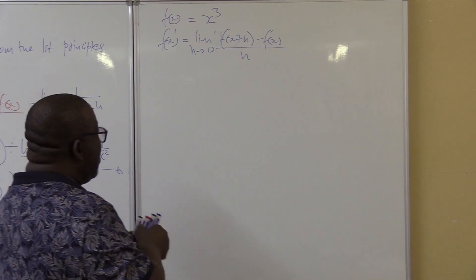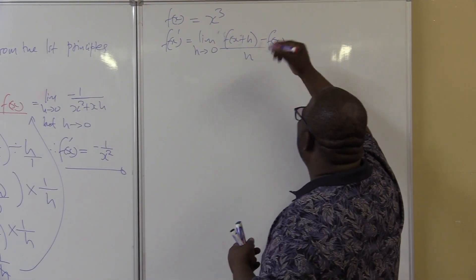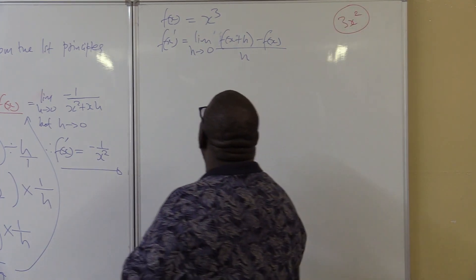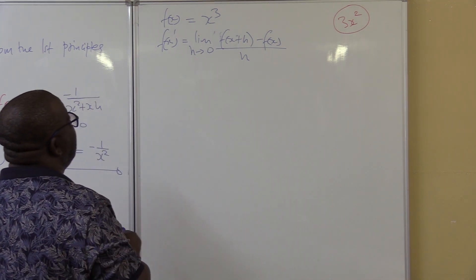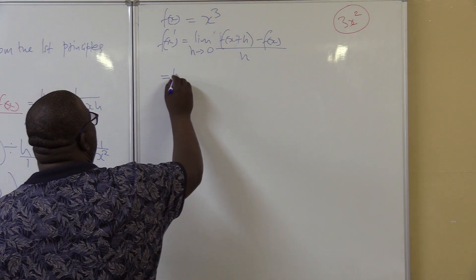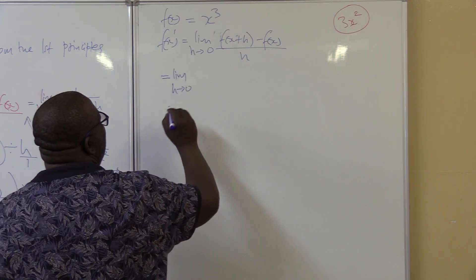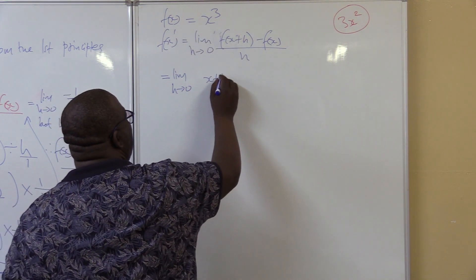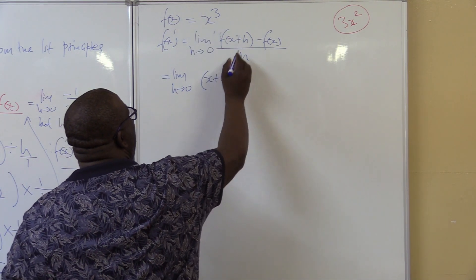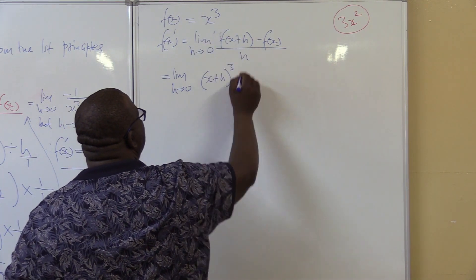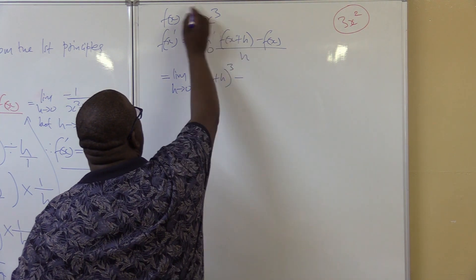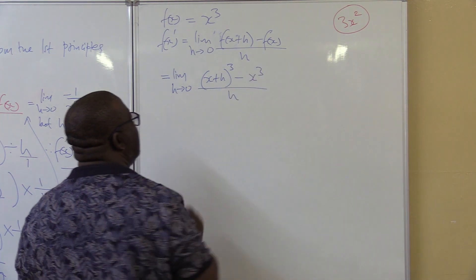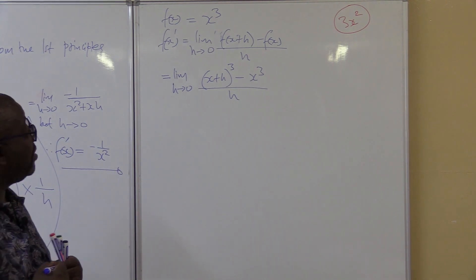What answer should we get here? We should get 3x squared at the end of the day. Let's work it out. f prime of x equals the limit as h approaches 0. Where there is x, I'm pushing in x plus h, so it's going to be x plus h all cubed, minus f of x, which is x cubed. This is all over h.